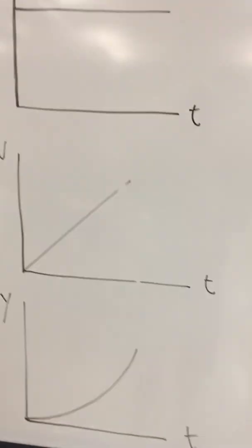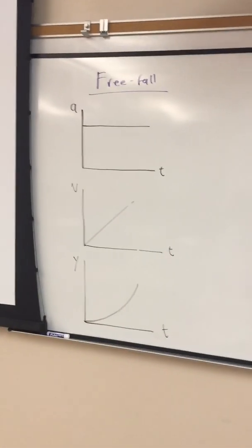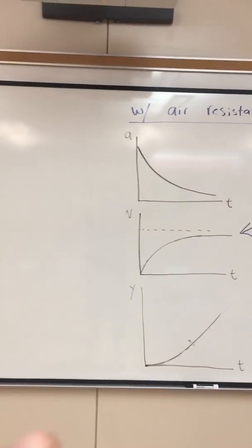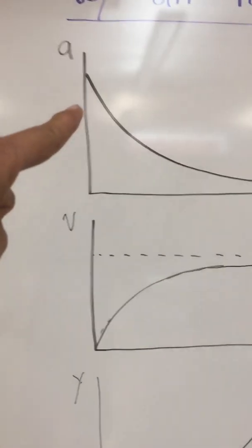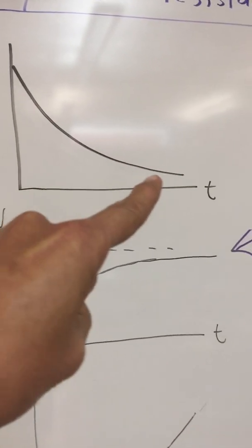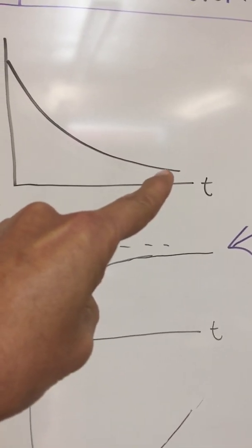What about the graphs for the coffee filter? By comparison, the acceleration started out at 9.8 meters per second squared, but then it rather quickly tapered off towards zero and it stopped accelerating.